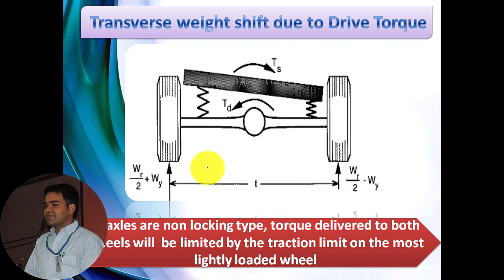The transverse weight shift occurs on all solid drive axles, whether front or rear. The basic reaction generated on the rear axle is shown in this figure. This reaction is due to the torque imposed by the drive shaft in the differential box. The drive torque is indicated by TD. Due to TD imposed by the drive shaft into the differential, the chassis may roll, creating compressing and extending effects in the springs. Due to this effect, the roll torque TS is produced, and its direction is opposite to drive torque TD.